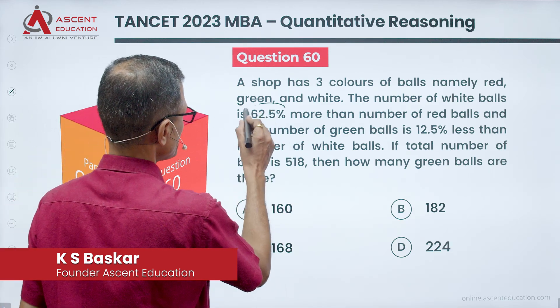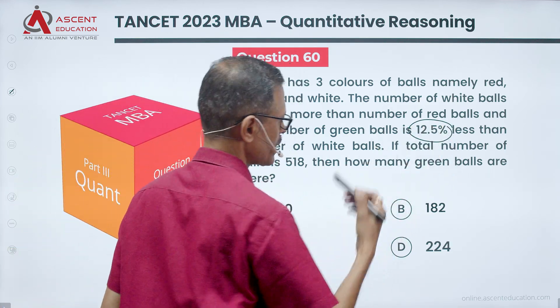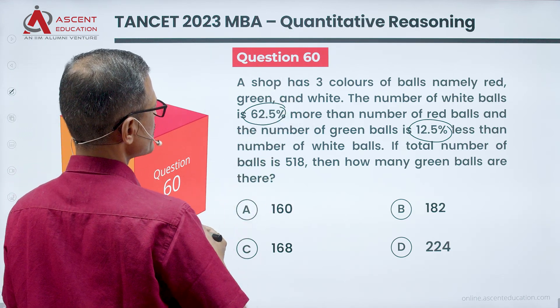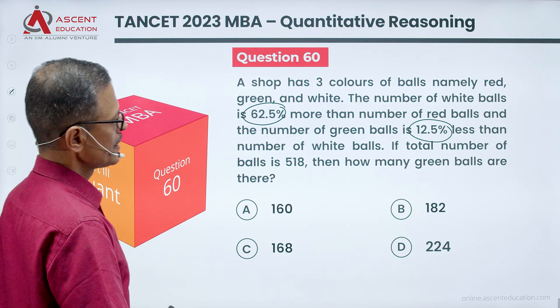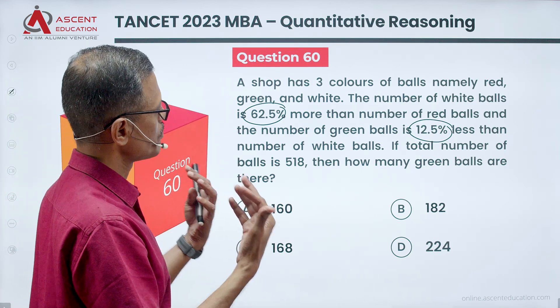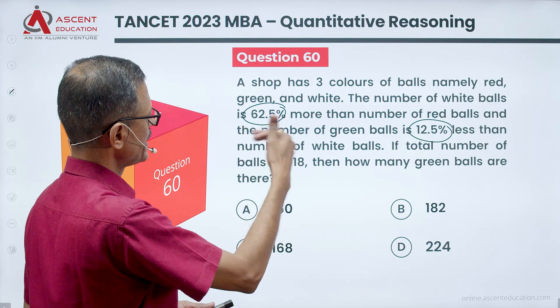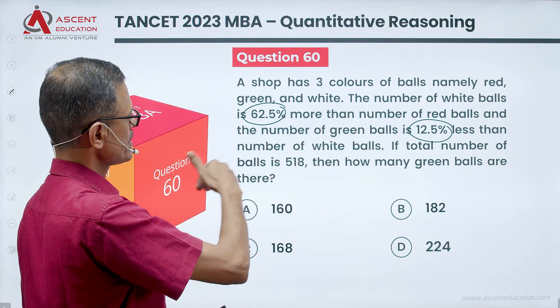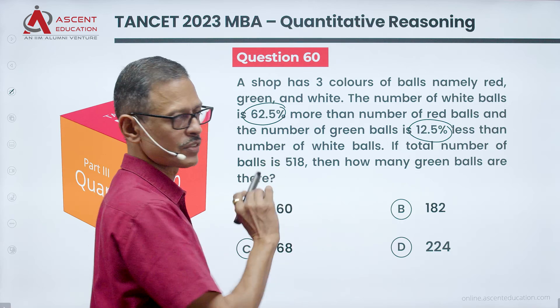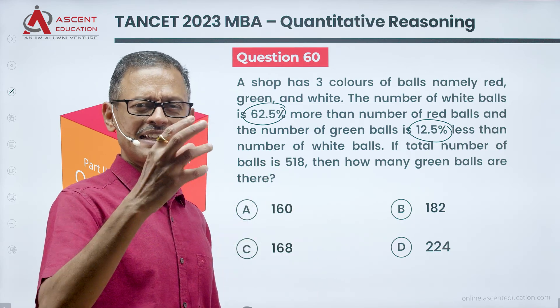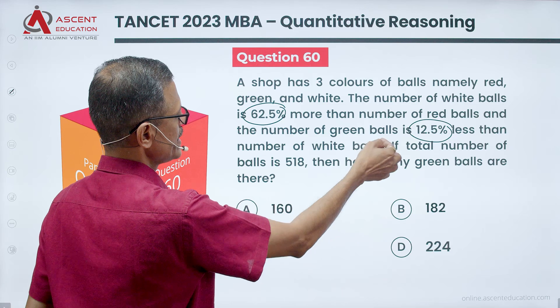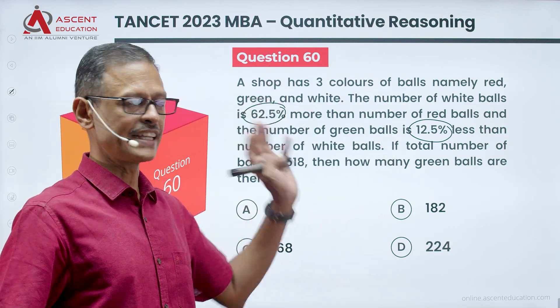Couple of things. If we get a fraction of this, life is very simple. We will do that and then get going with the question. A shop has three colours of balls, namely red, green and white. White balls in terms of red balls, green balls in terms of white balls. There is white everywhere. In this statement, we can say green and white. In this statement, we can say red and white.